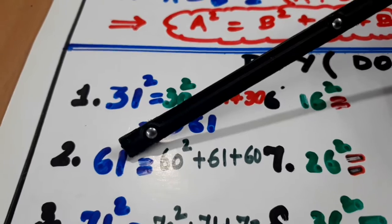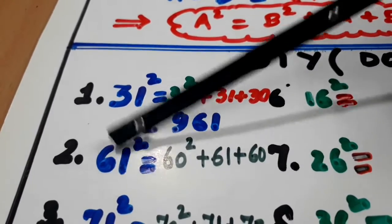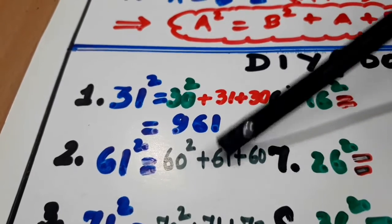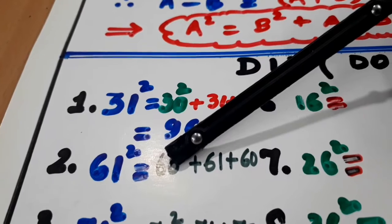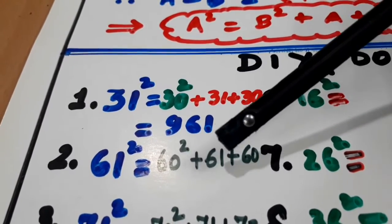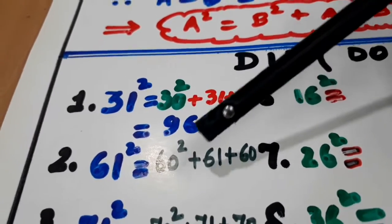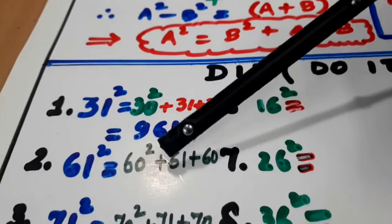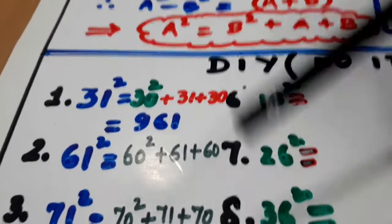61 ka square. Ek kam karo. 60 ka square. Phir 61 or 60 yaan likh do. Dono ayat kal do. 60 square. 3600. 61 and 60, 121, 300, 3721 ban jai ga. So this is you have to do like this.